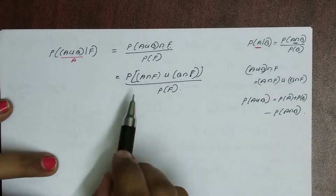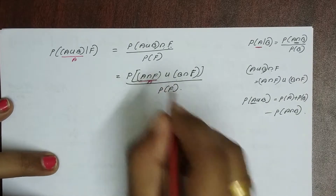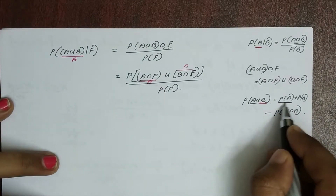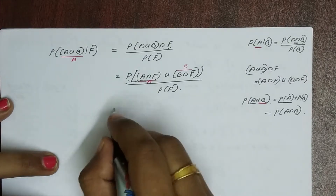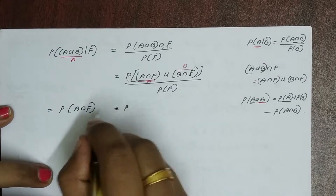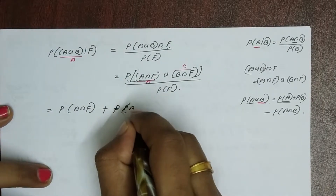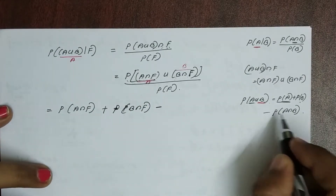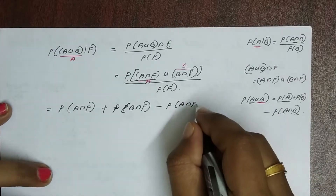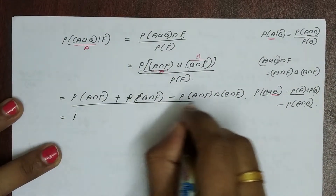For the numerator, A corresponds to A intersection F and B corresponds to B intersection F. Using the addition rule, this becomes: probability of A intersection F plus probability of B intersection F minus probability of A intersection F intersection B intersection F, all divided by probability of F.